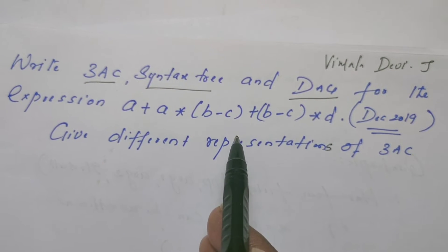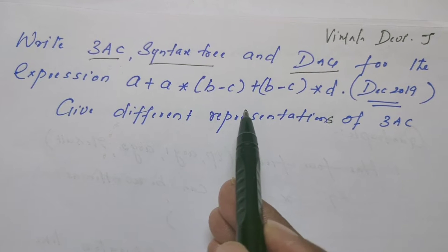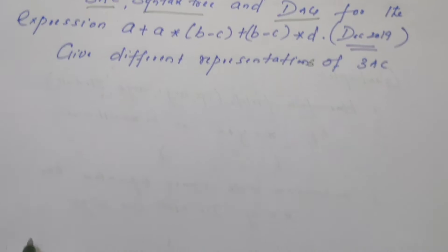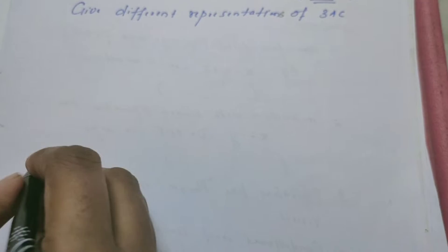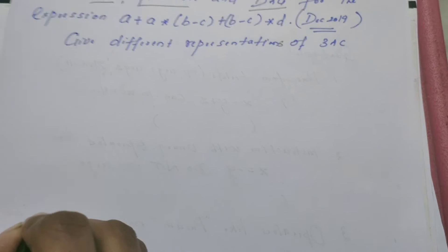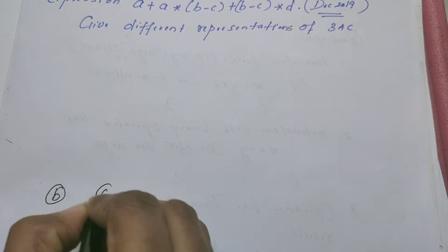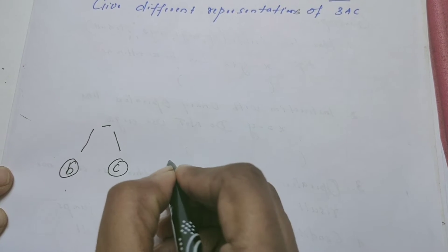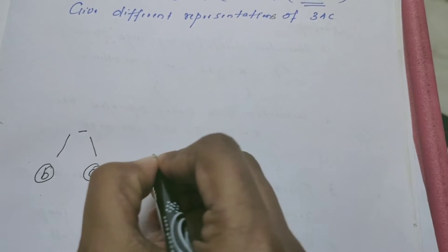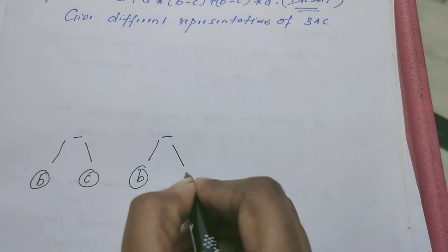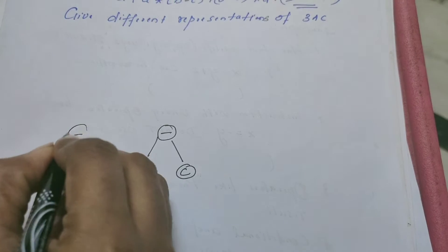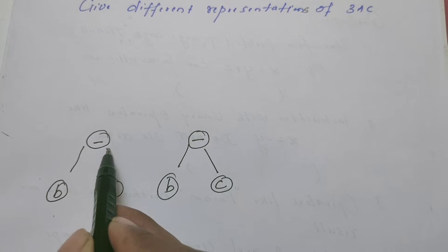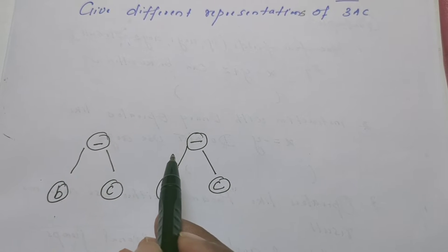For this expression, we have already drawn the syntax tree and DAG in my previous video. I will construct the syntax tree once again here. For B, a leaf node is created. For C, also a leaf node is created. Then minus. So leaf nodes are created with the operands, and the operators become the parent node. So two times B minus C is created.